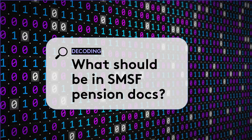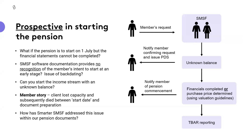Moving on to what should be in our SMSF pension document — let's start to decode this. For a lot of our software-based documents, what we naturally know is that if we have pensions that start on the 1st of July, how do we ensure our paperwork reflects that without actually having to backdate those documents? Has there been some sort of formal request done? It could be done orally or by written notice.